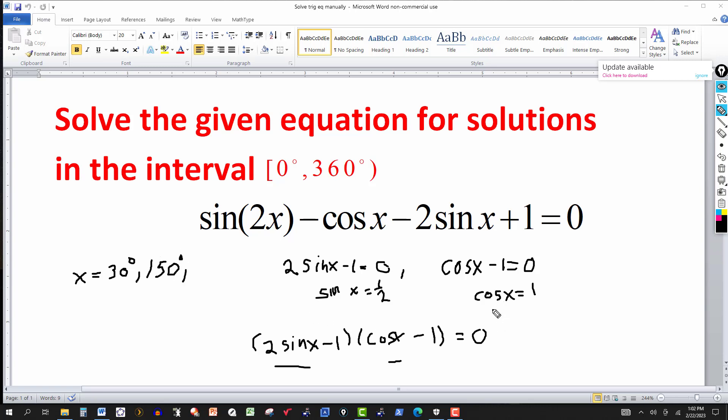And for the other equation right here, cosine of x equals to one, that gives zero degrees. And those are the three solutions in the interval from zero to 360.